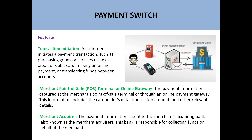The first feature is transaction initiation. Whenever a customer initiates a payment transaction — such as purchasing goods or services using a credit or debit card, using online payments through a mobile application, internet banking, or transferring balance between accounts — the transaction is initiated through the payment switch. The payment information is captured at the merchant's point of sale terminal or through an online payment gateway, and includes cardholder data, transaction amount, and other relevant details.